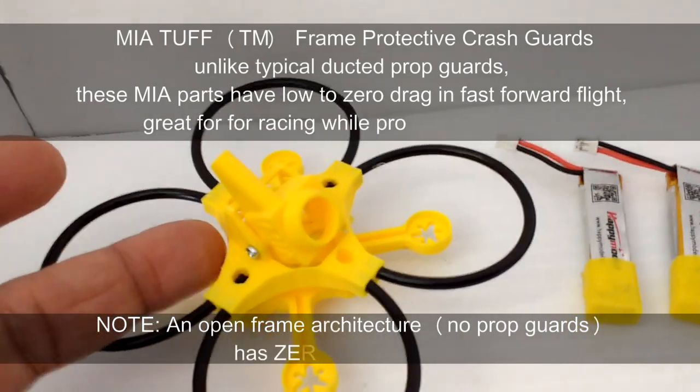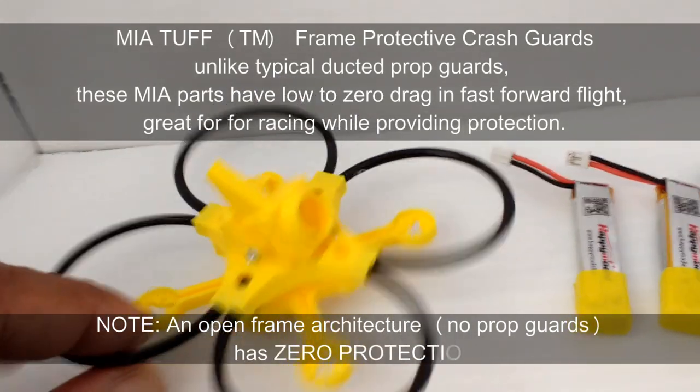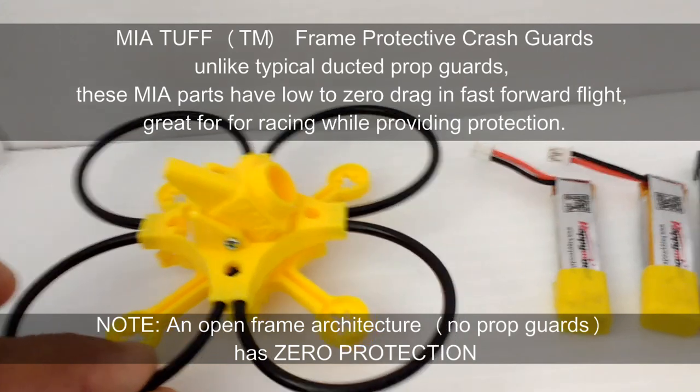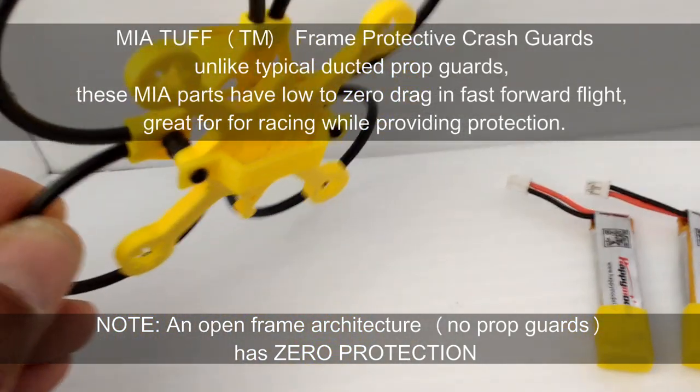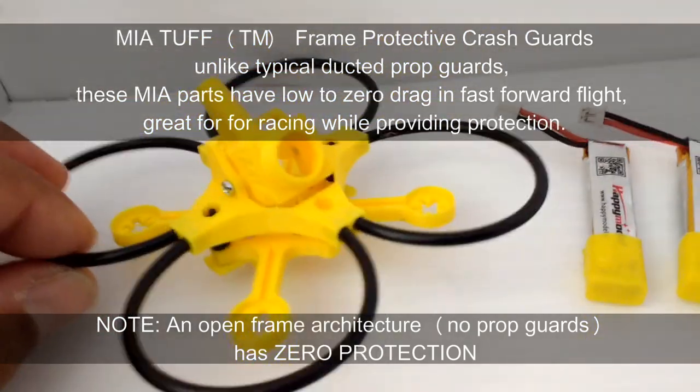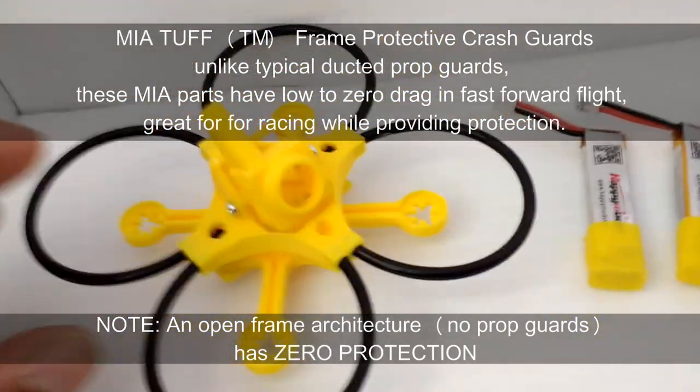You have the body which encompasses the protective rings—these are the tough rings, indestructible rings. And you have the base and the battery strap. This is designed for the Mobula 7 or similar size tiny whoop microcopter or racing drones.